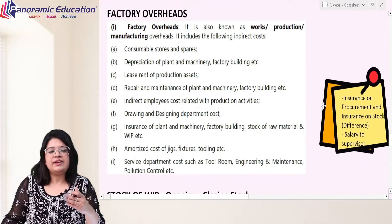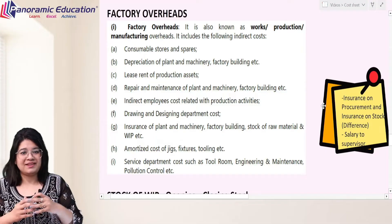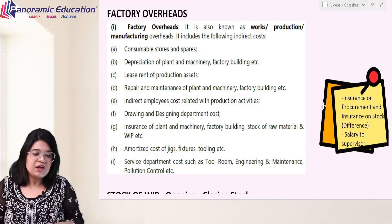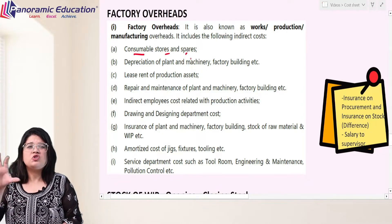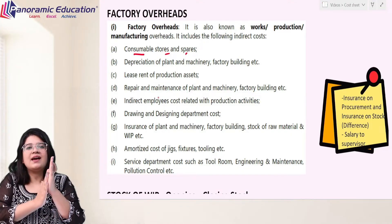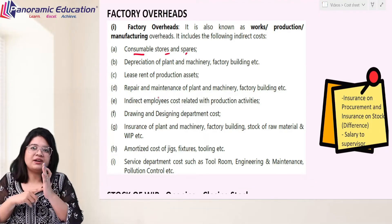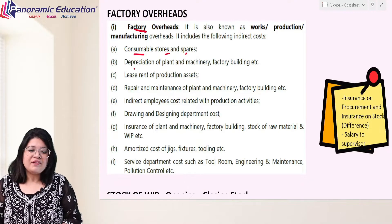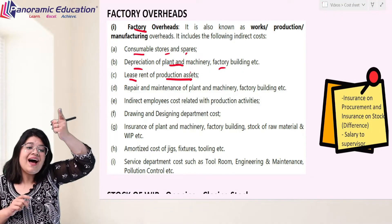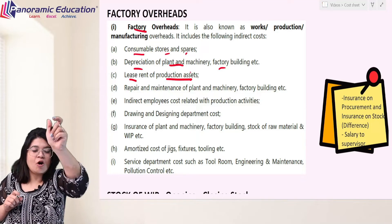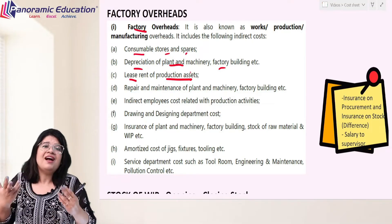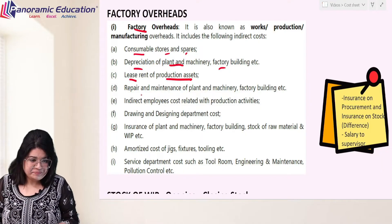Next, we add factory overheads. Up to this point we discussed prime cost; now we consider indirect expenses. Consumable stores and spare parts are machine-affiliated, so the expenditure is for machines — meaning for production, not directly for the product — that is why it is a part of factory overhead. Depreciation of plant and machinery, factory building, and lease rent of any production asset are included. Note the difference: earlier we had hiring charges of a specific asset, but here lease rent is for any production asset used for all 10 products generally — so it is a factory expense. Repairs and maintenance of machine, plant, and factory building are also included.